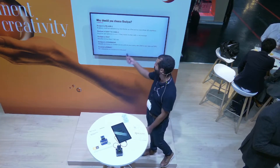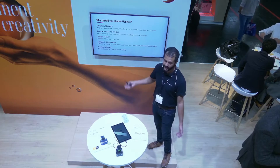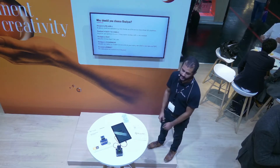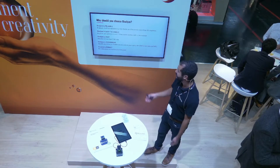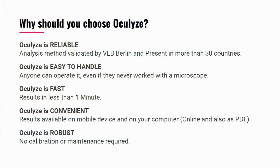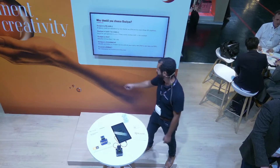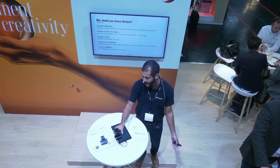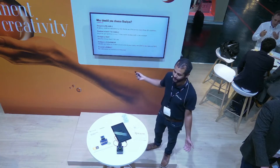Why should you choose Alcoholize? Because Alcoholize is reliable — our analysis method was validated by the VLB and it's already present in more than 30 different countries. Alcoholize is easy to handle — anyone can operate it even without microscope experience. Alcoholize is fast, delivering results within one minute. It's also convenient because results are available on your mobile device, computer, online, or as a PDF file. And Alcoholize is robust — it doesn't need calibration or maintenance.